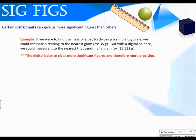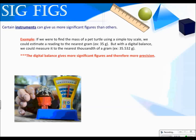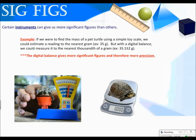Certain instruments can give us more significant figures than others. For example, if we were to find the mass of a pet turtle using a simple toy scale, we could estimate a reading to the nearest gram — for example, I might say this looks like 35 grams. But with a digital balance, we could measure the turtle's mass to the nearest thousandths of a gram — for example, 35.532 grams. The digital balance gives us more significant figures; therefore, it's more precise.